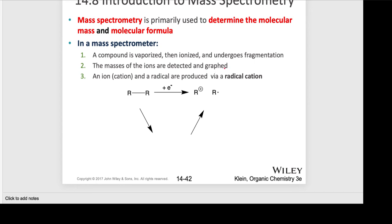Please note that you often get clusters of peaks, and you'll see that in a couple of examples coming up. An ion — specifically a cation, so there's a positive charge — and a radical are produced, and what you are forming is a radical cation.